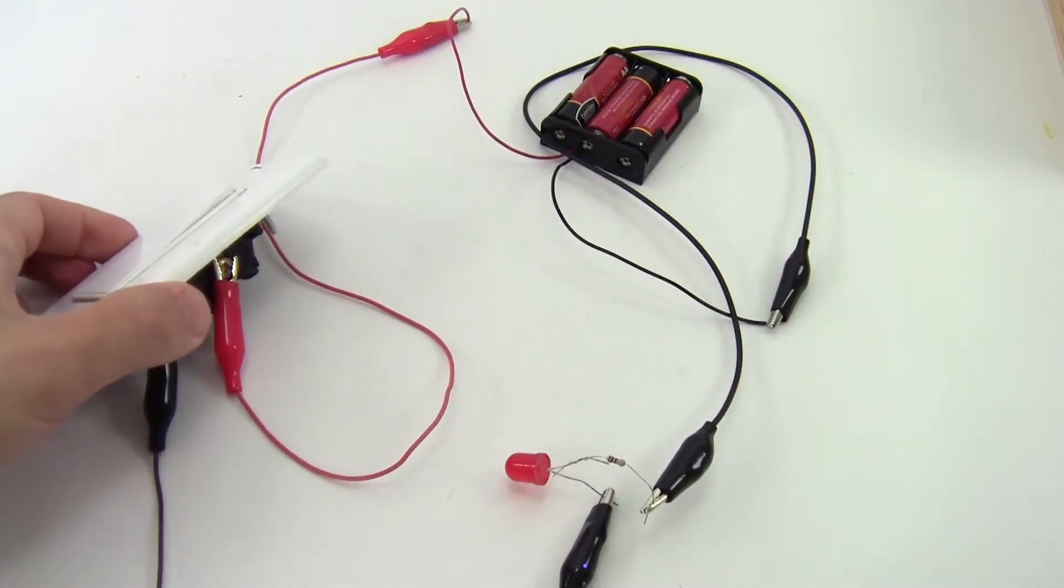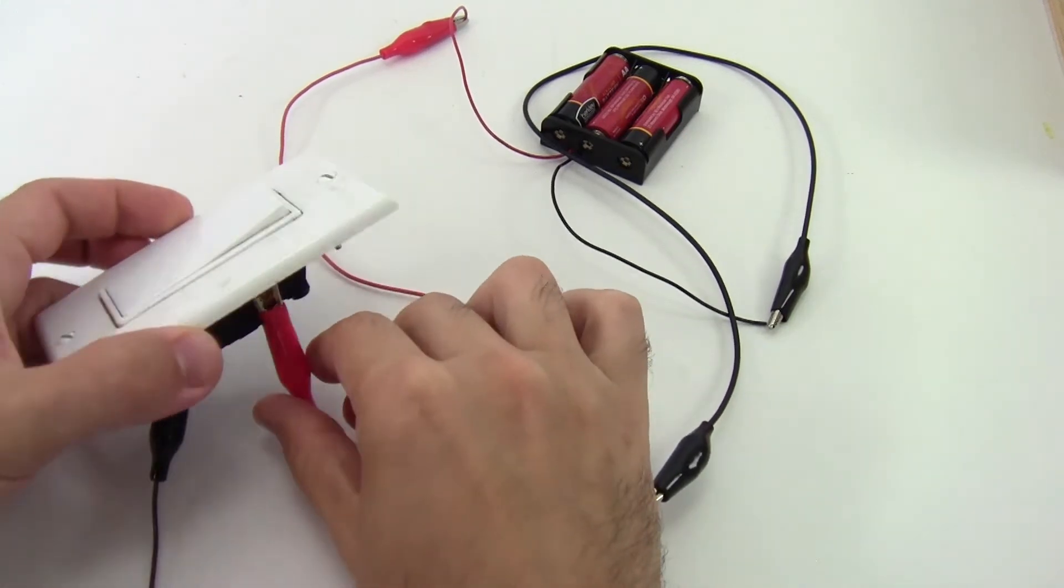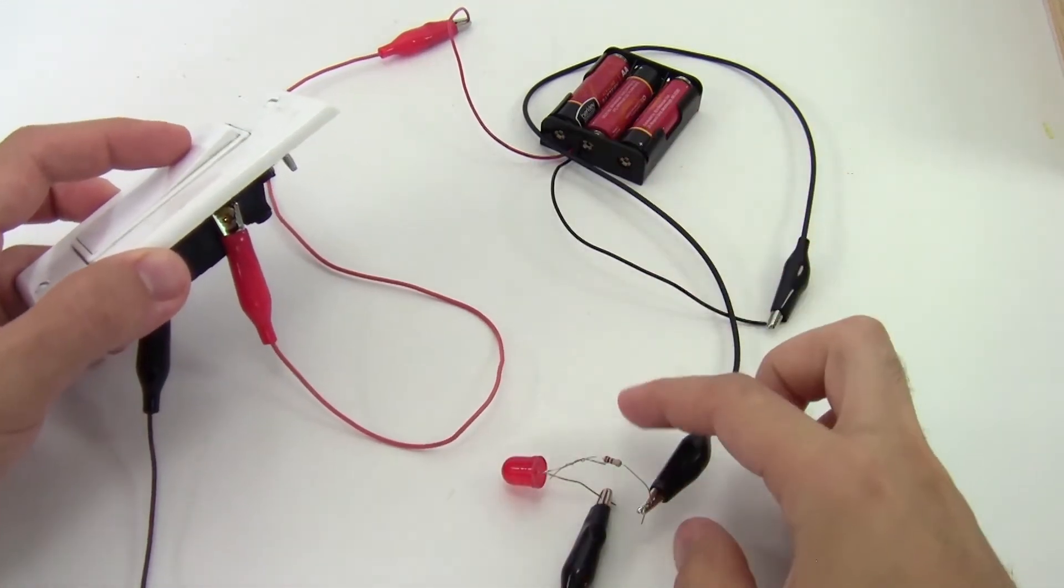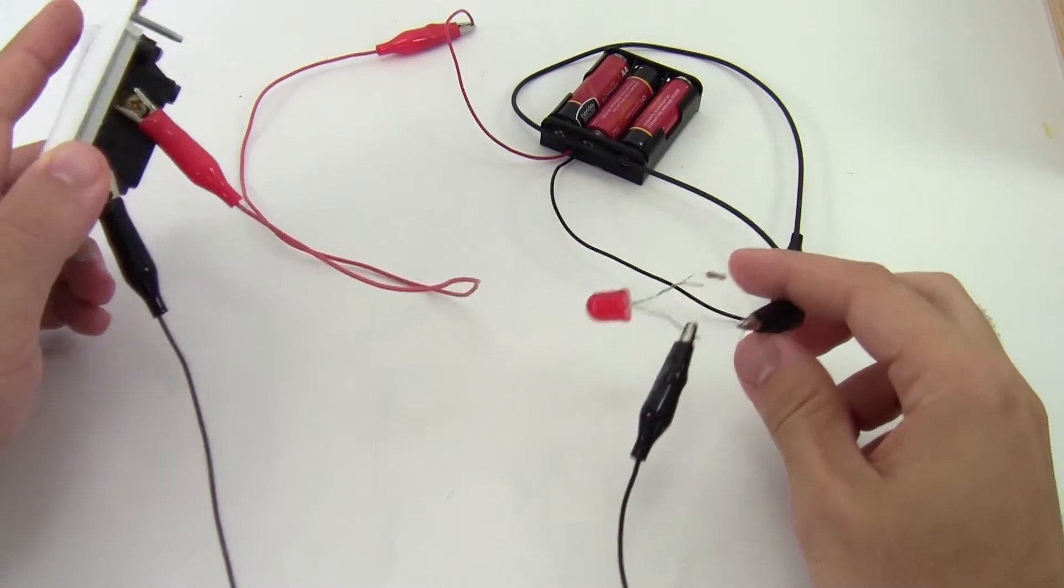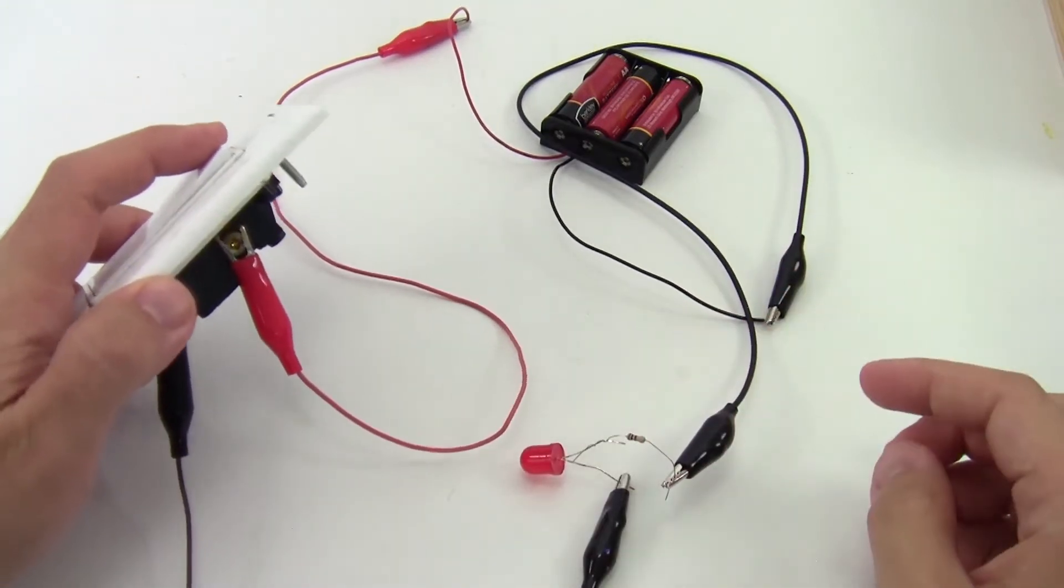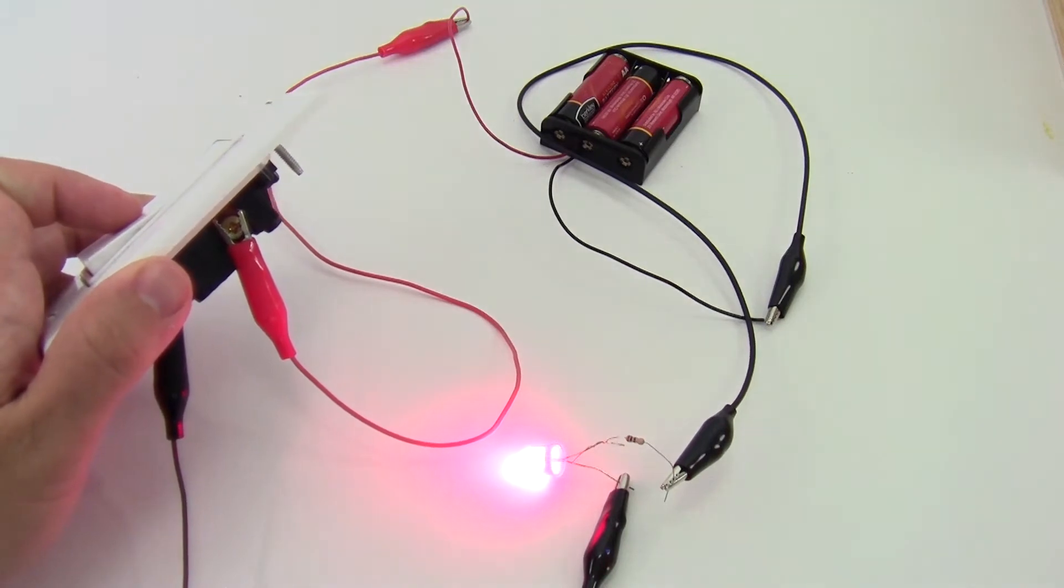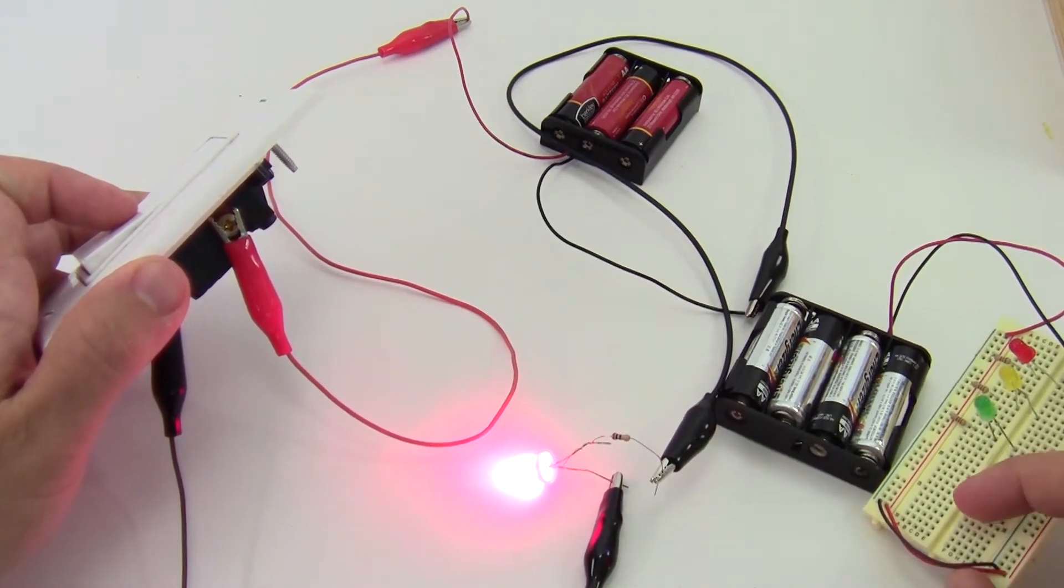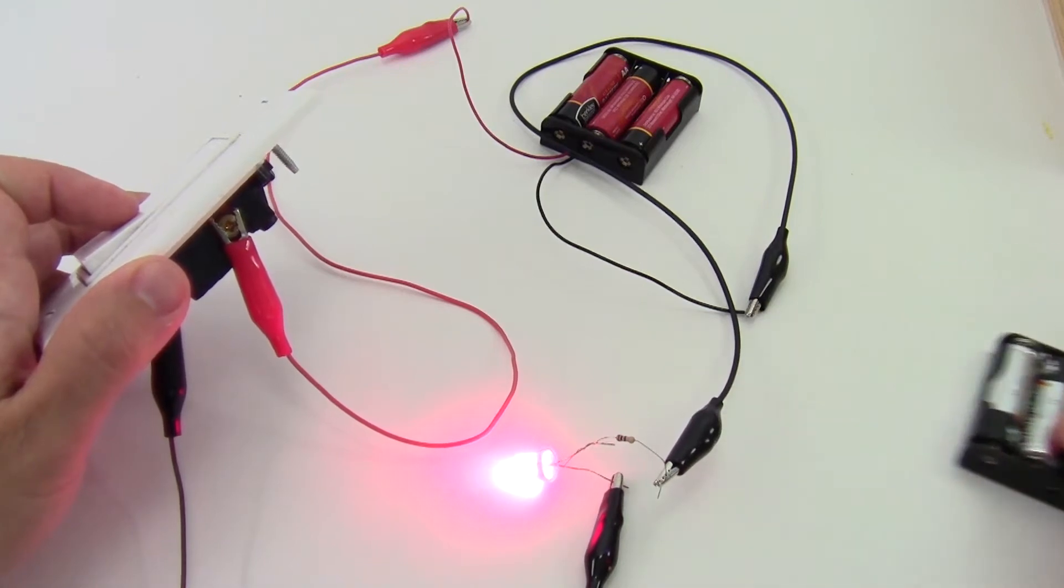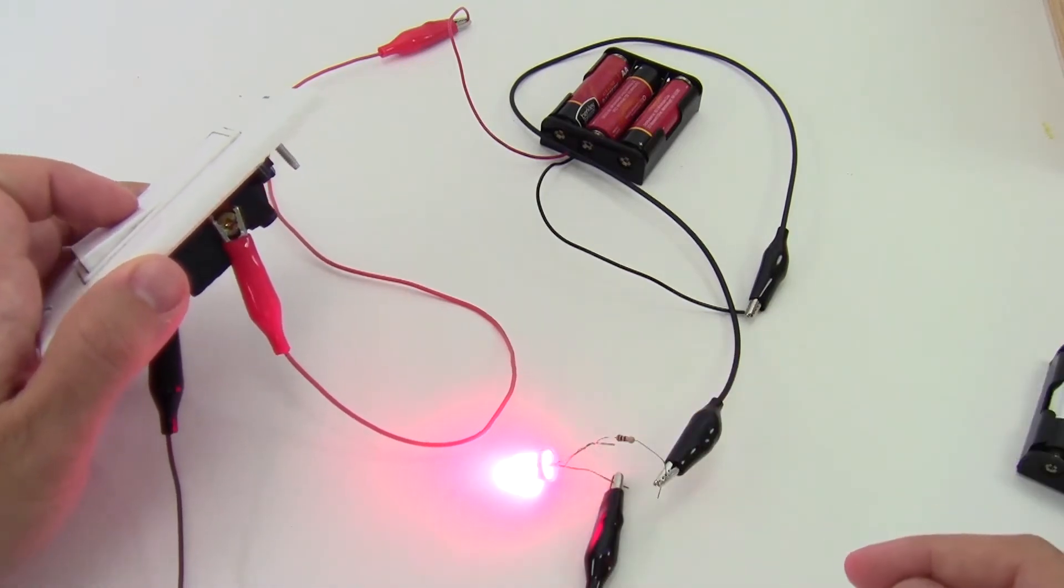So here I have an example circuit where I have used alligator clips to attach my switch to my battery pack and my resistor and LED. So I just have one circuit in series here, and you can see when I turn the switch on, the LED turns on. Again, this is pretty much the same as the circuit I had built here, except now it's no longer on a breadboard. I have the whole thing wired with alligator clips.